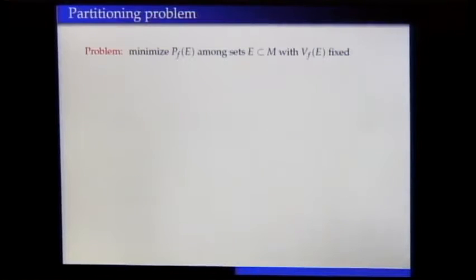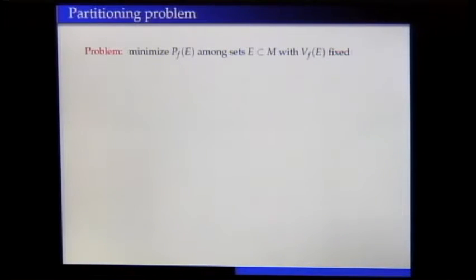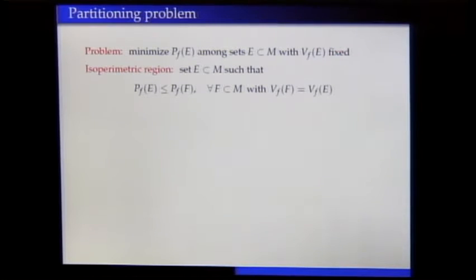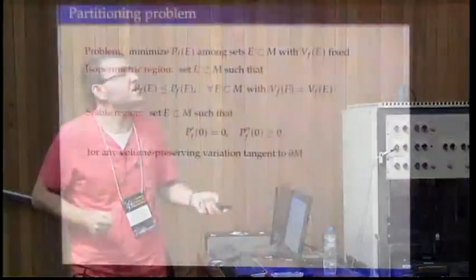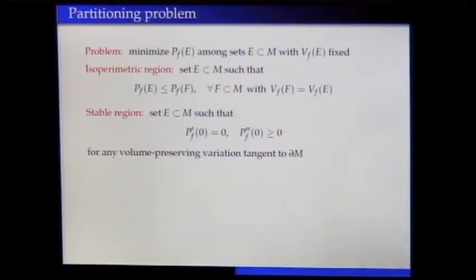Once we have notions of volume and perimeter, we can study the partitioning problem: minimizing the perimeter functional among sets enclosing a given amount of volume inside the manifold. The solutions, when they exist, are called isoperimetric regions and are global minimizers of perimeter under a volume constraint. We will also be interested in stable regions, which are second-order minima of the perimeter functional associated to volume-preserving variations of the set while preserving the boundary of the ambient manifold. Any isoperimetric region is stable, but the converse is not true in general.